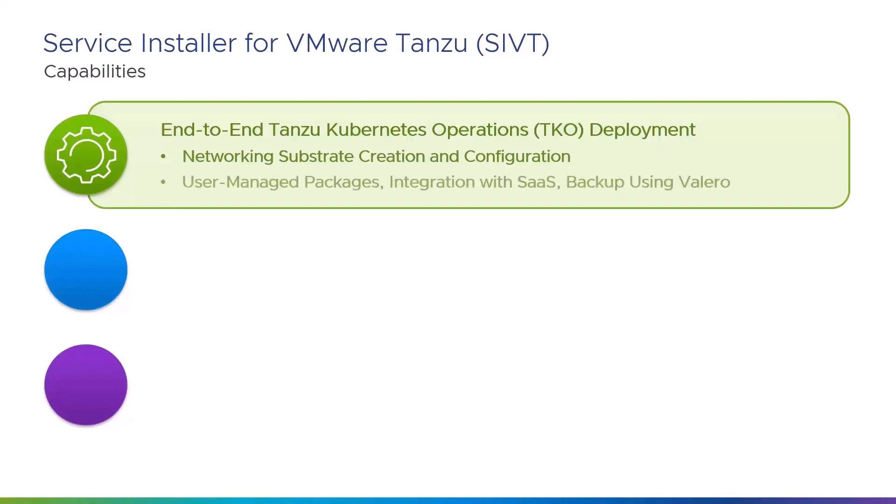SIVT deploys user-managed packages such as Pinniped, Contour, CertManager, Harbor, Grafana, Prometheus, and Fluentbit. It sets up integration with Tanzu SaaS components: Tanzu Mission Control, Tanzu Observability, and Tanzu Service Mesh. Note that SaaS integration is not applicable for air-gapped environments.